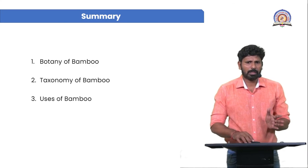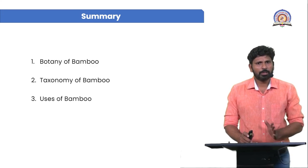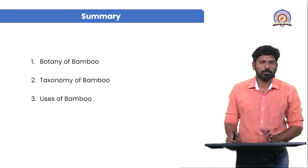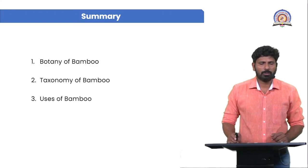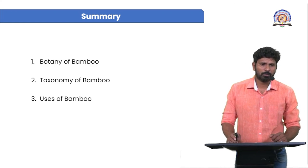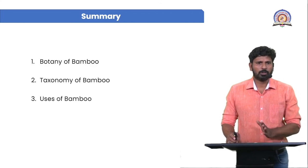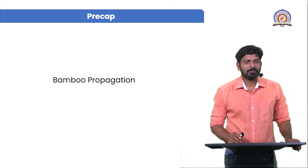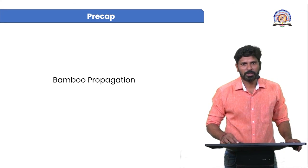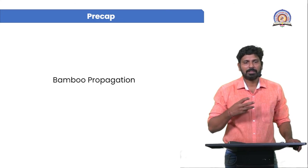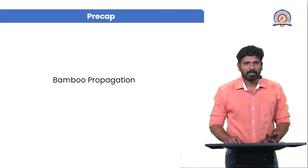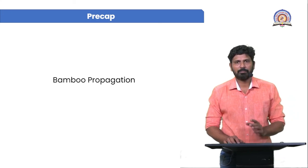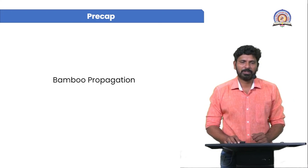To summarize what we have discussed today: botany of bamboo, taxonomy of bamboo, and uses of bamboo. In the botany section, we covered the morphological structure of bamboo. In taxonomy, we saw its classification and nomenclature. The third aspect is the uses of bamboo. In the next lecture, we will discuss bamboo propagation — actual cultivation and maintenance. Thank you very much.